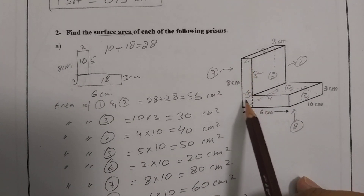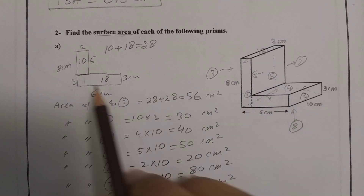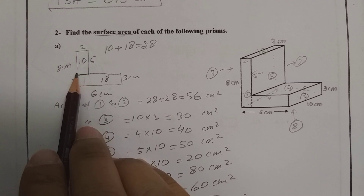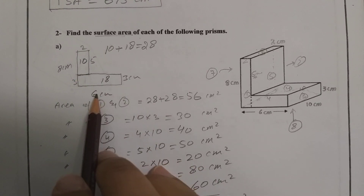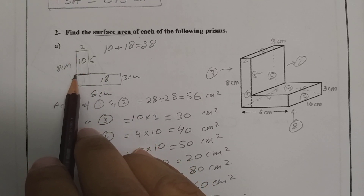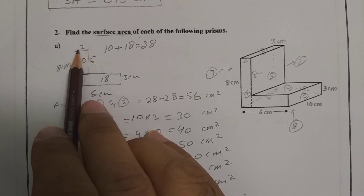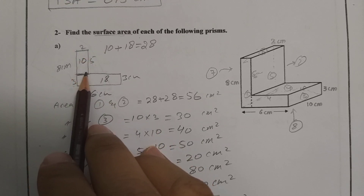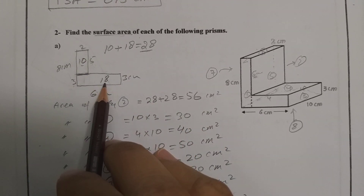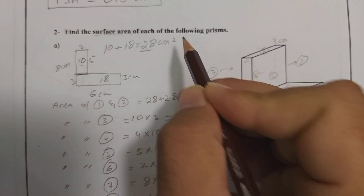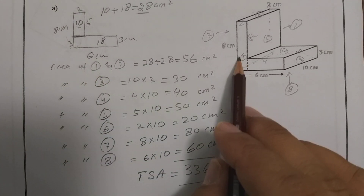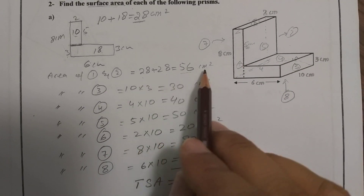Starting with the front L-shape: the total height is 8 and the base is 6. I split it into two rectangles. The first is 3 × 6 = 18. After cutting 3 from the total height of 8, we have 5 remaining; the width there is 2, so 5 × 2 = 10. The total L-shape area is 18 + 10 = 28 cm². The back L-shape is identical, so faces 1 and 2 combined = 28 + 28 = 56 cm².